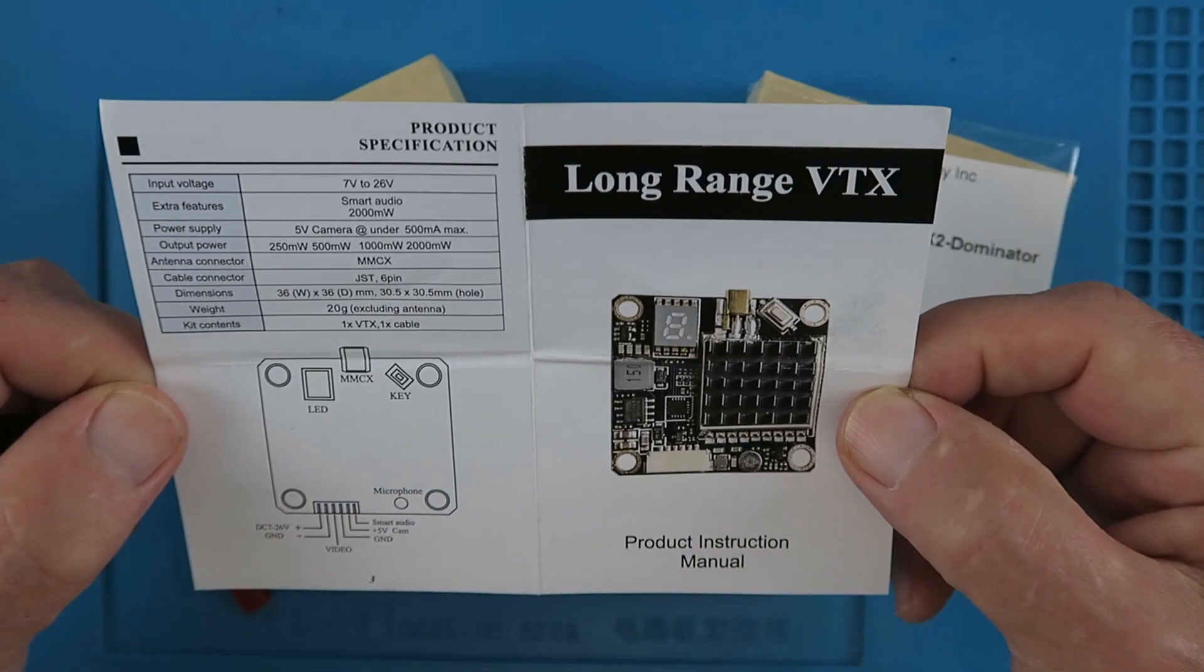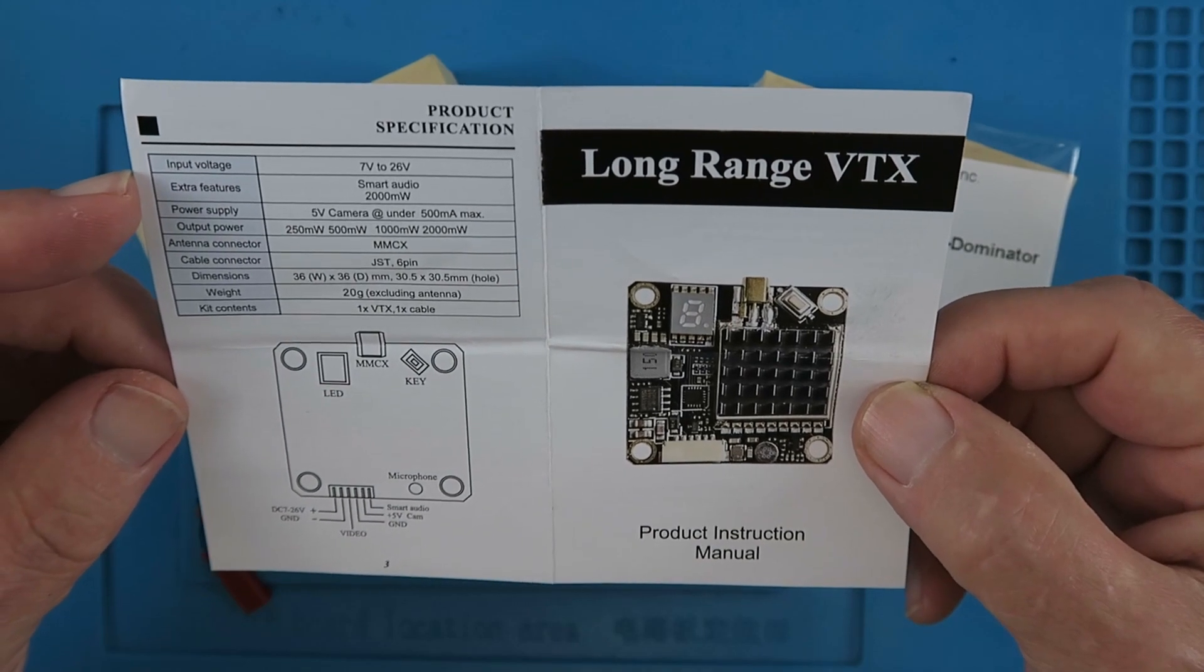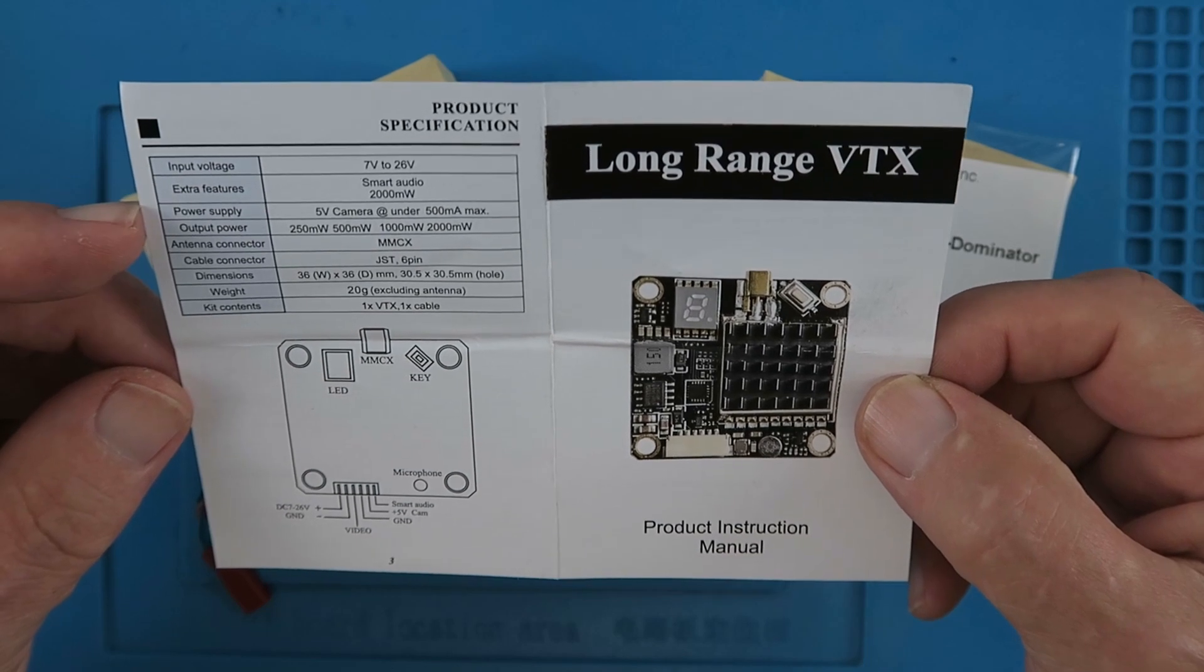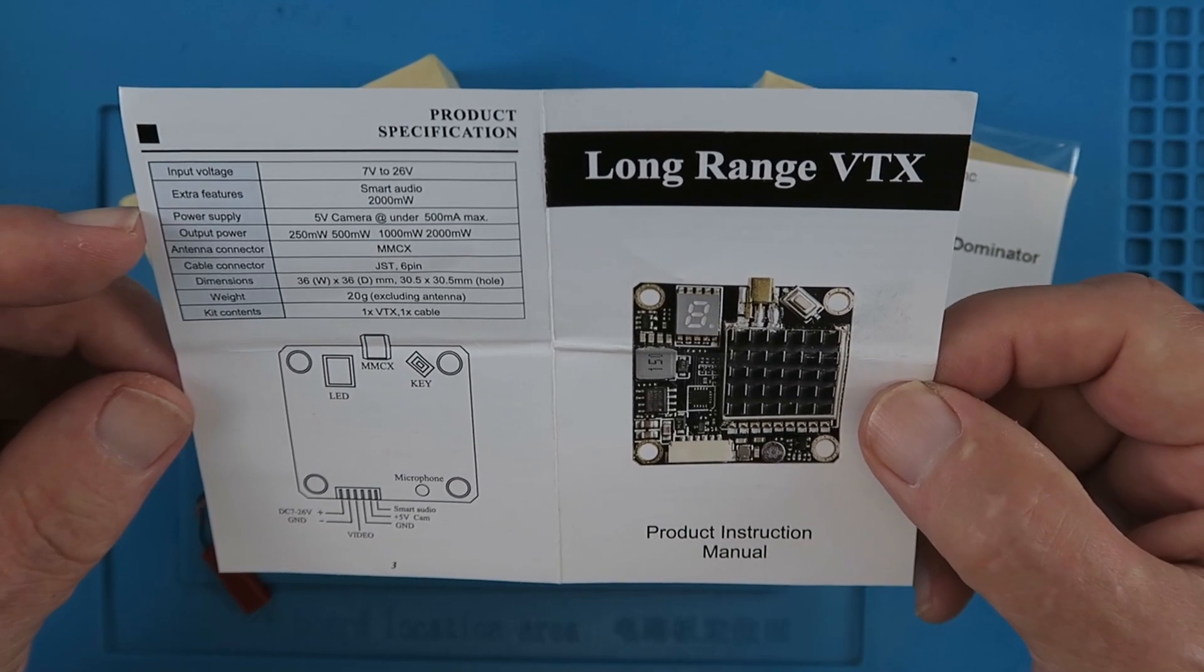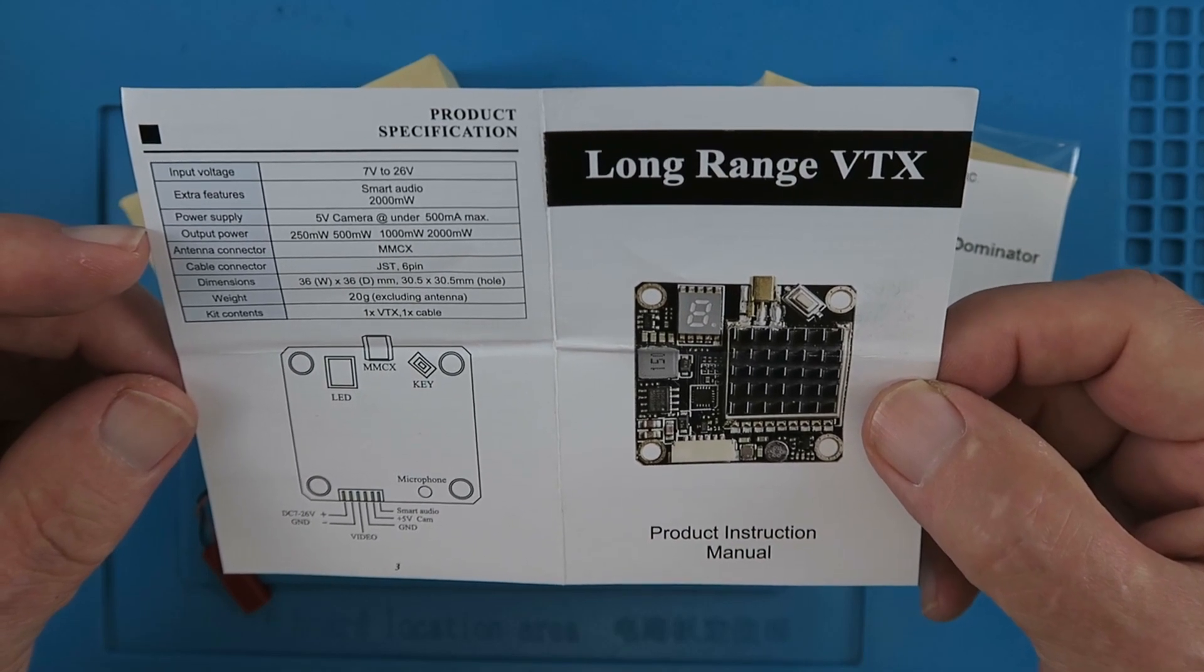The usual brief manual says from 7 to 26 volts, has smart audio capability to be controlled via the transmitter. It outputs 5 volts for a camera, up to 500 milliamps, and the output power is selectable: 250,